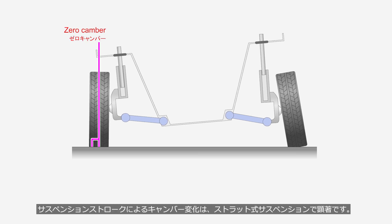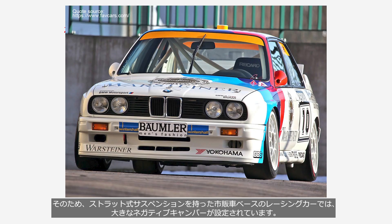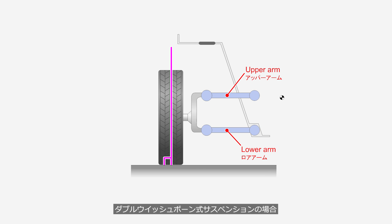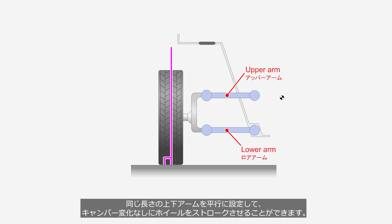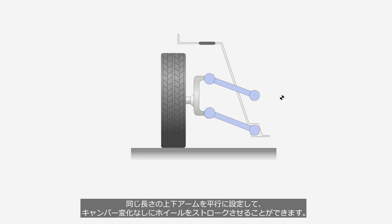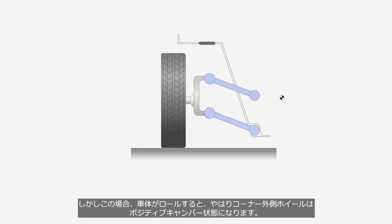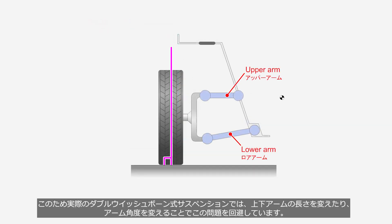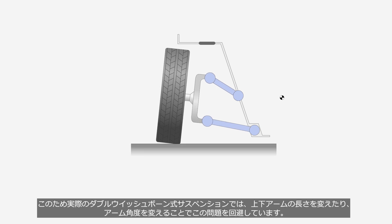The change in camber due to suspension stroke is pronounced in strut-type suspensions, so racing cars based on production vehicles with strut-type suspension are set with a large negative camber. In the case of a double wishbone suspension, setting the upper and lower arms to the same length and parallel allows the wheel to move through its stroke without any change in camber. However, when the body rolls, the outer wheel in the corner still ends up in a positive camber position. For this reason, actual double wishbone suspensions avoid this issue by varying the lengths of the upper and lower arms or adjusting the arm angles — which is why the double wishbone suspension is said to have a high degree of design flexibility.